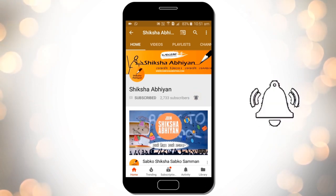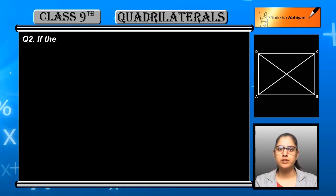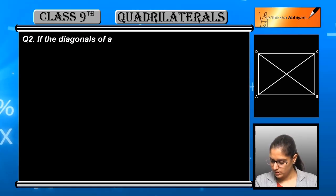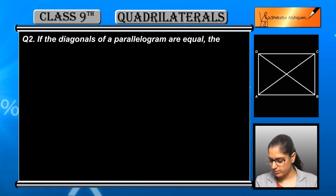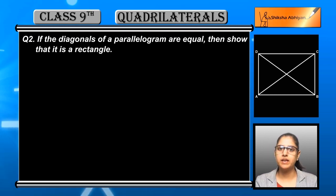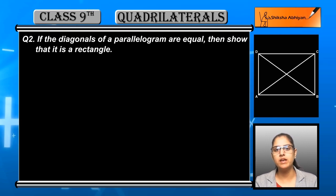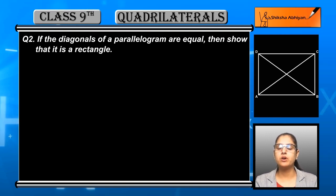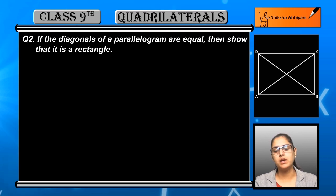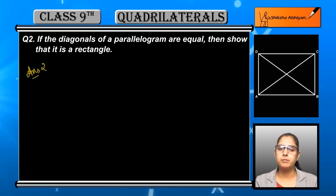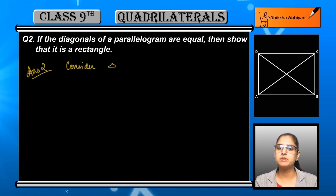Question number two: if the diagonals of a parallelogram are equal, then show that it is a rectangle. Given a parallelogram whose diagonals are equal, we need to show that the parallelogram is also a rectangle. First of all, we need to know about the parallelogram and rectangle properties to prove this.